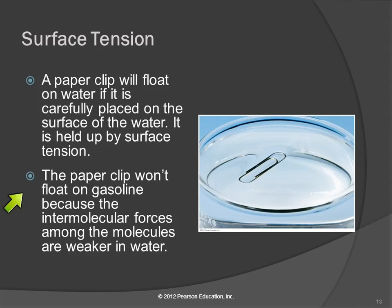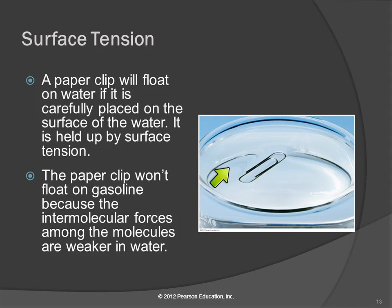The paperclip will not float on a liquid like gasoline because gasoline has much weaker intermolecular forces, and so the paperclip will just sink right through. And if you get the paperclip to float and then put a little bit of soap in the water, the soap will disrupt the intermolecular forces and it'll sink just like that.